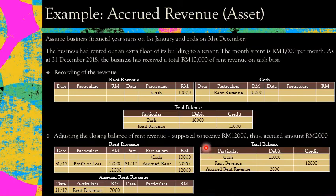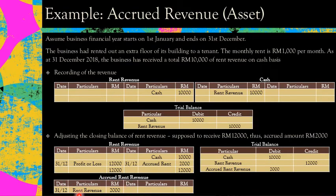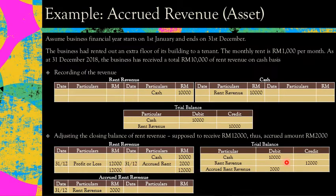Accrued revenue is an asset, so put it on the debit side. Debit accrued rent revenue and credit rent revenue. So your rent revenue increases to RM12,000. In the trial balance, put RM12,000 for rent revenue and on the debit side add accrued rent revenue RM2,000.